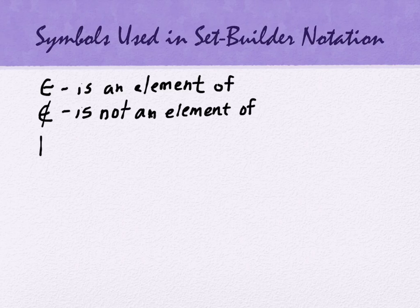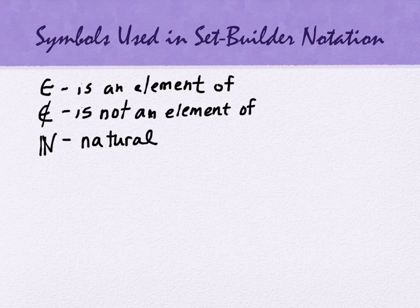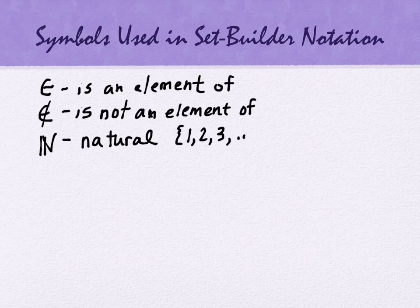All right. So this was the first one that I used, this N with this double line on the left. These are the natural numbers, and the natural numbers are the numbers that you first learn to count with when you first start learning to count. You start with the number one. So this is one, two, three, and on and on indefinitely forever.